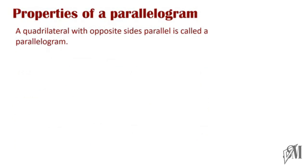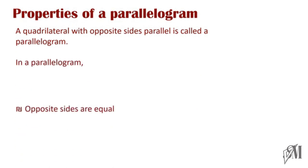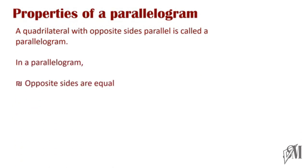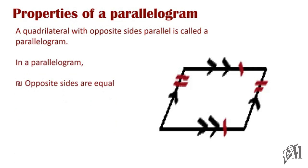When we look into the properties of a parallelogram, the opposite sides of a parallelogram are equal, as marked in the diagram. At the same time, the opposite angles are also equal. If I mark these two angles as A and these two angles as B, you can see the opposite angles are equal.